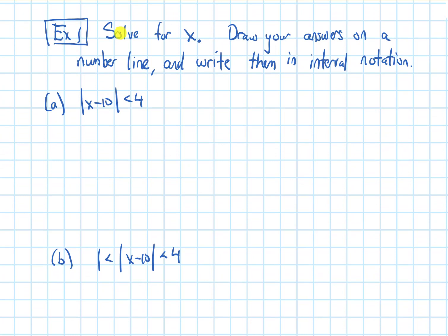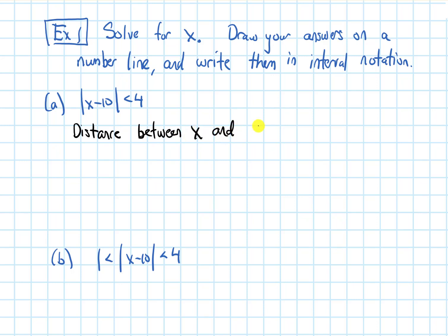Let's solve for x, draw your answers on a number line, and write them in interval notation. We have inequalities that involve absolute values, so let's think of each of these as distances. The left-hand side is saying the distance between x and 10, and then we have a less than symbol. So the distance between x and 10 is less than 4.